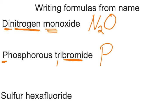Now there's no prefix for that element because it's understood it's only one. How many bromines do we have? If we have 'tri', we have three of them. So bromine three, PBr3, will be your phosphorus tribromide.